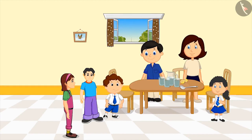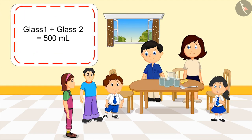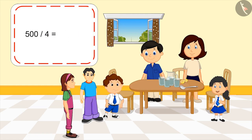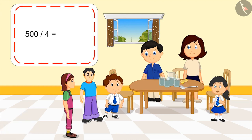Meanwhile, two friends of Pinky arrive. We should give lemonade to our friends too. Why don't we share a part of our lemonade with them? Look, in total we have two glasses of lemonade. Then how much lemonade will we all get? As Mom explained, we have five hundred ml of lemonade — you mean half a litre? Yes, let's divide five hundred by four. Kids, you can pause the video and think about the answer. We will all have one hundred and twenty-five ml of lemonade.